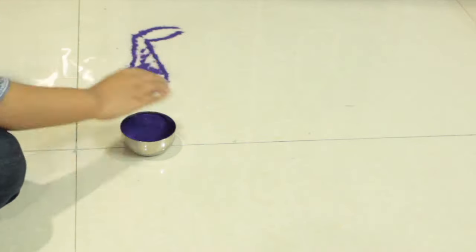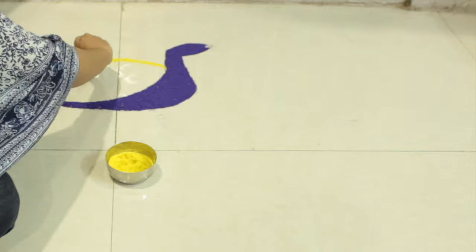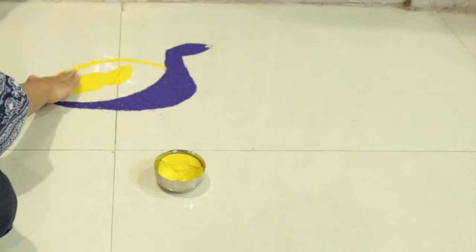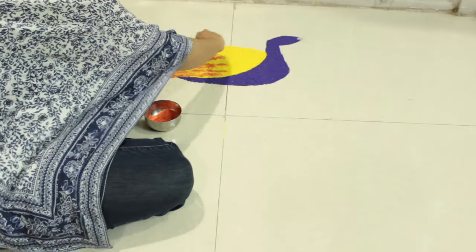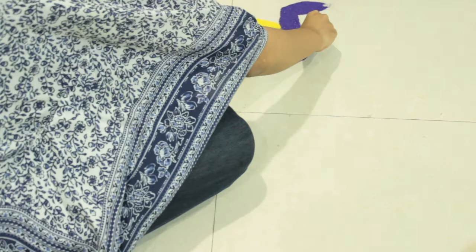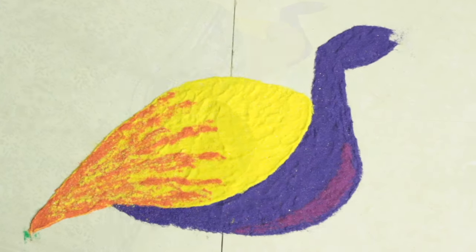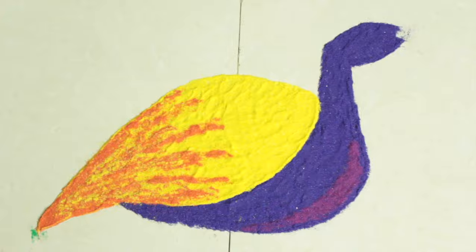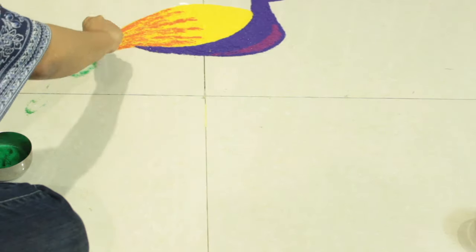Then we will use yellow color to draw its wings. Then we will shade the wing using orange color like this. Now we will take a light purple color like this to shade the body of the peacock.